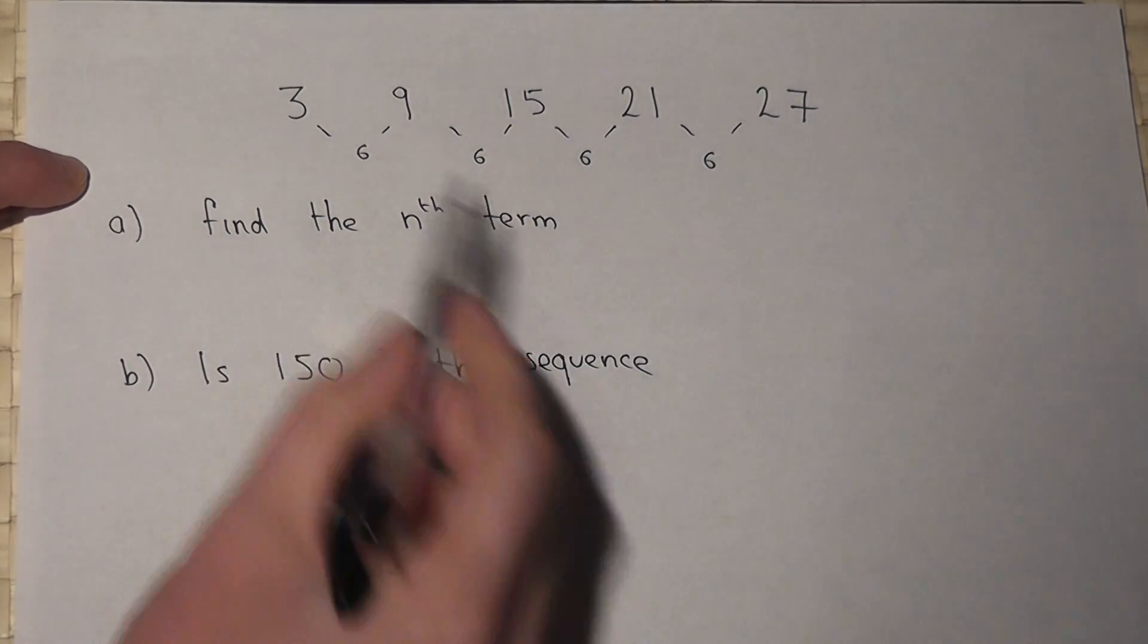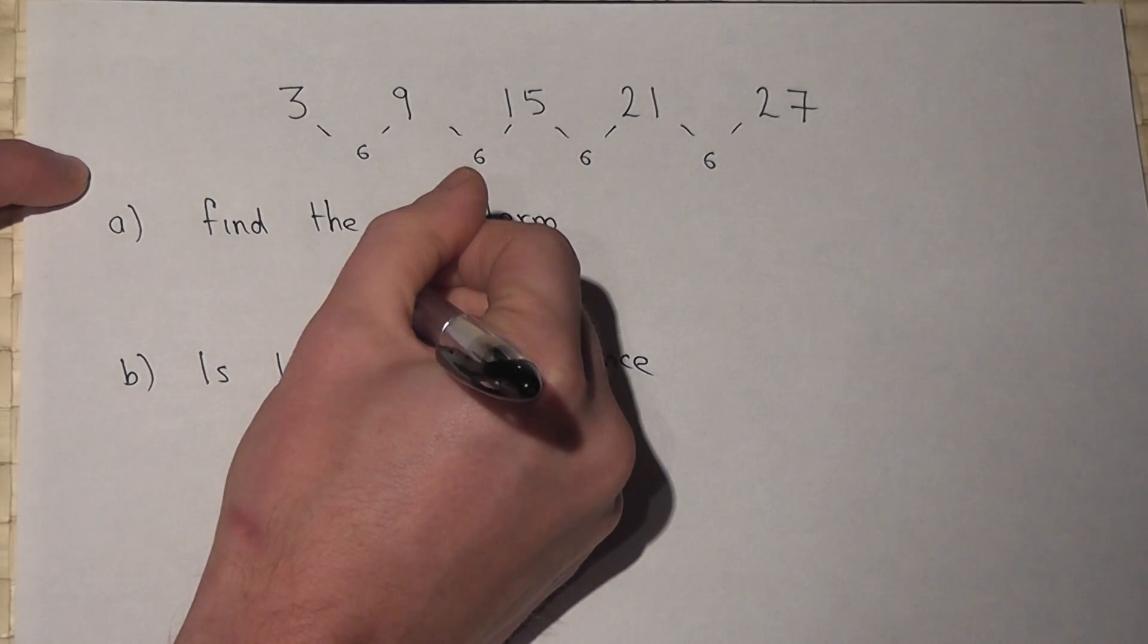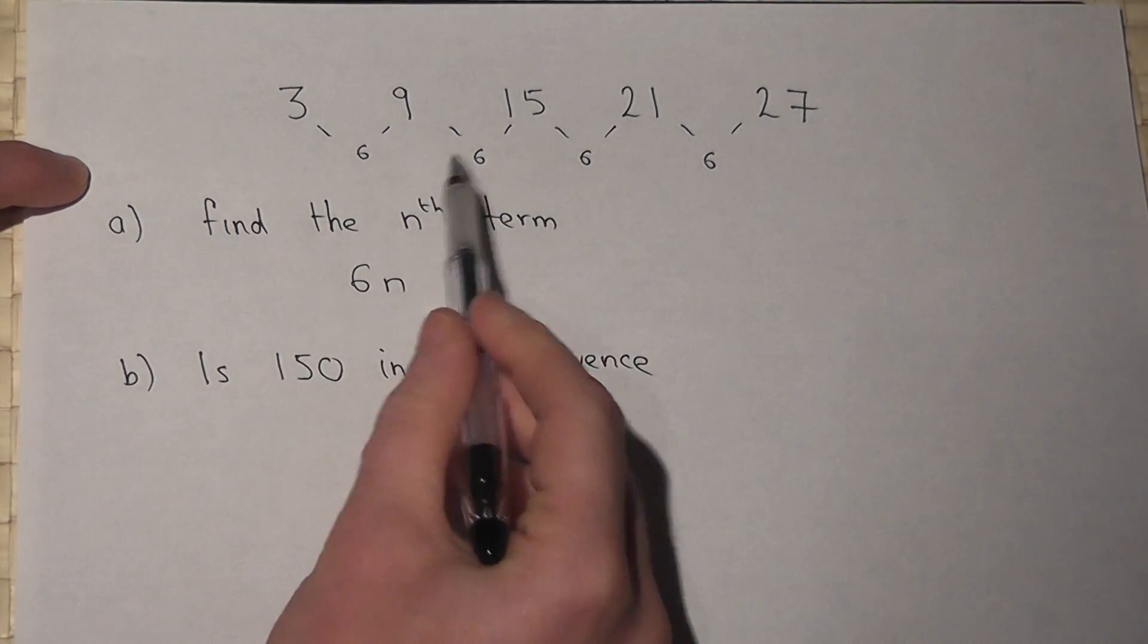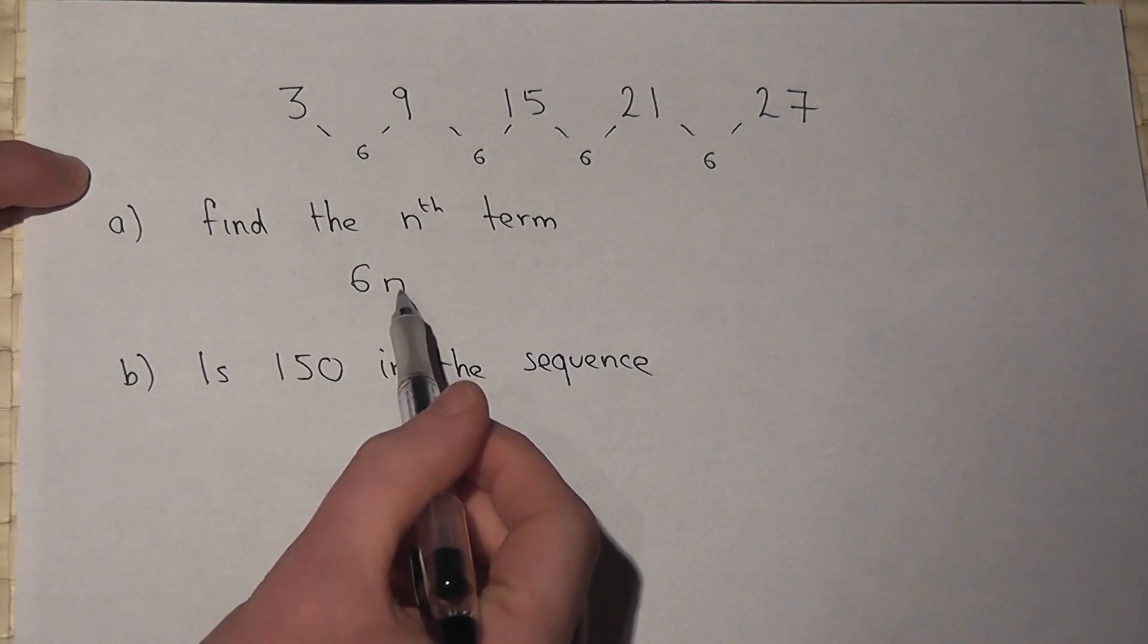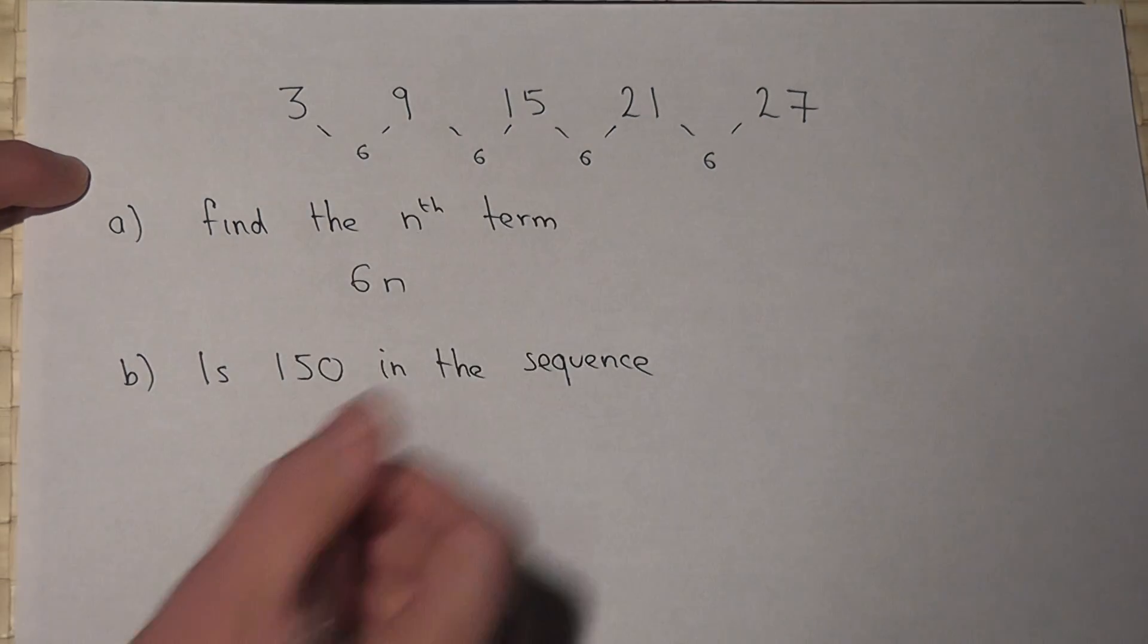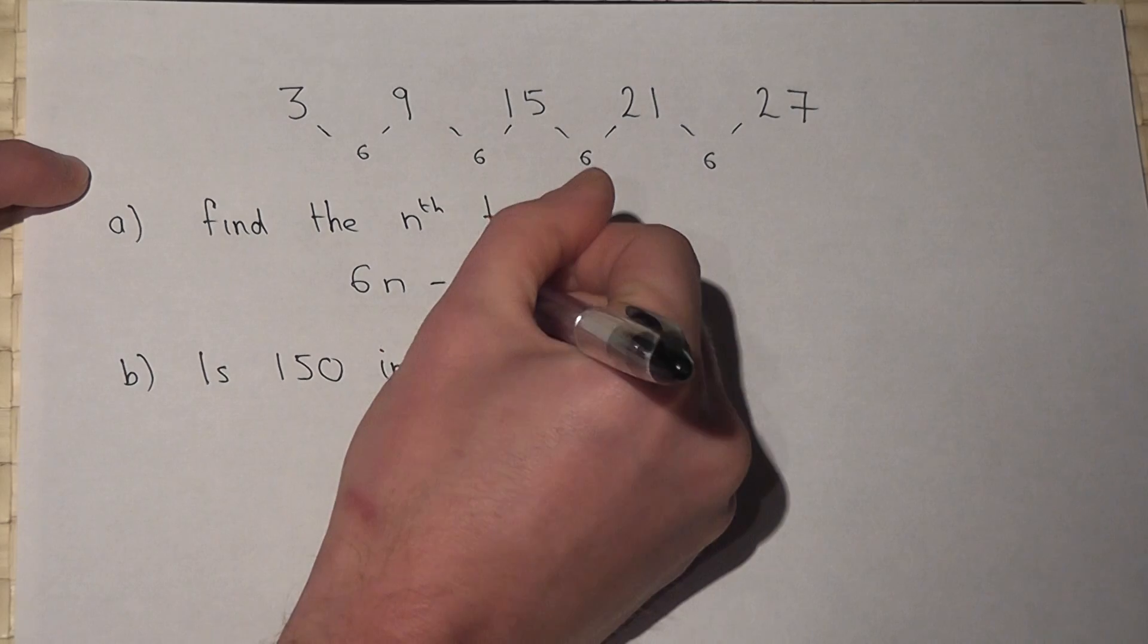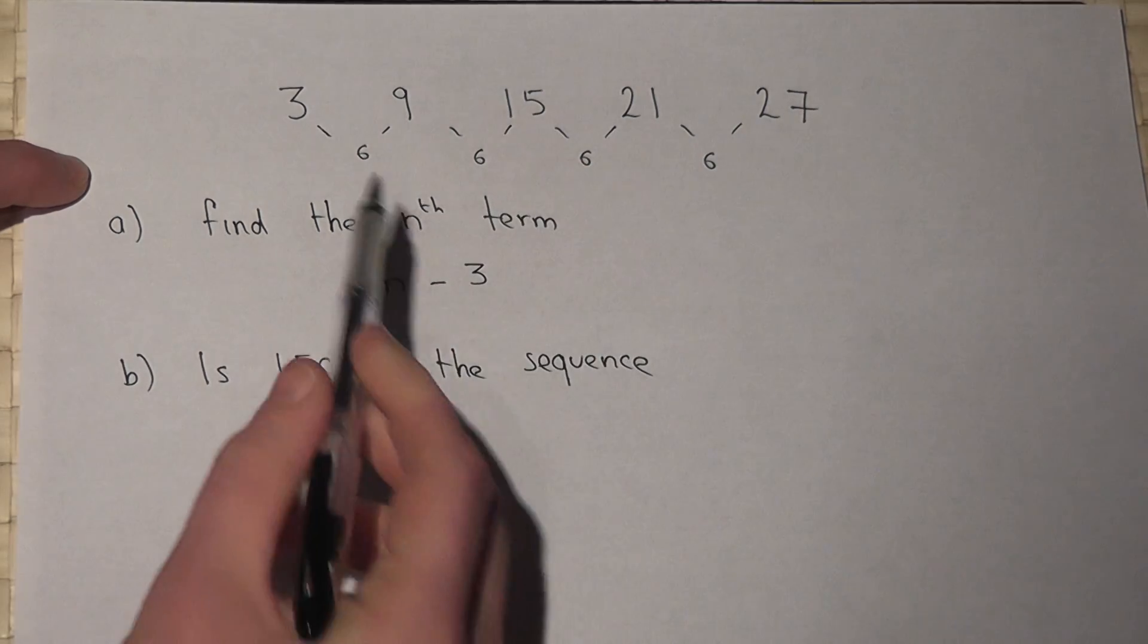So this sequence is of the form 6n, which comes from the constant difference. However, this sequence does not start at 6, it starts at 3. So I must take away 3 to get to the first term.